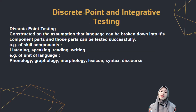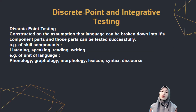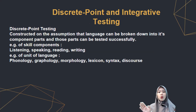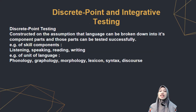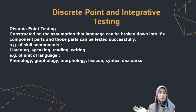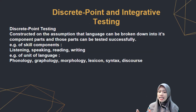Discrete point testing is constructed on the assumption that language can be broken down into its component parts and those parts can be tested successfully. Examples of skills components include listening, speaking, reading, and writing. Examples of units of language include phonology, graphology, morphology, lexicon, syntax, and discourse.